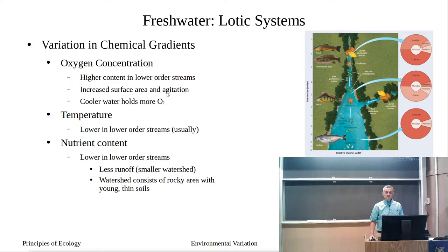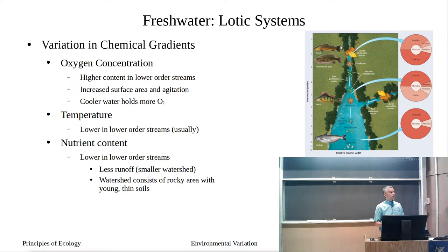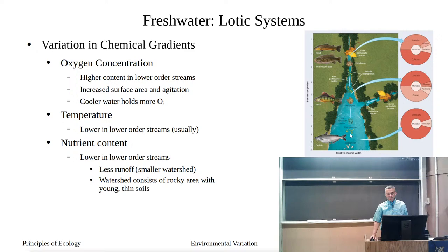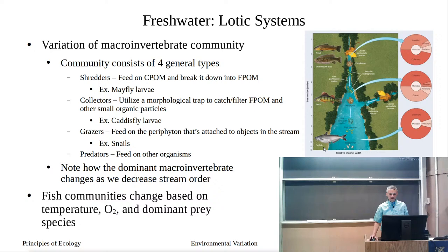Oxygen content is highest at lower-order streams and lower downstream — for two reasons. First, there's a lot of surface area relative to volume up at the top providing agitation, and colder water holds more oxygen. As we approach the mouth of the river, water flows more slowly, there's less surface area relative to volume, so less oxygen transfer into the water. The water is also warmer, which means it holds less oxygen.